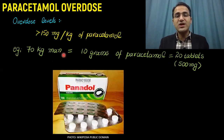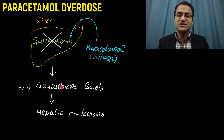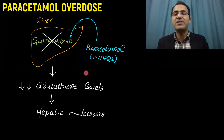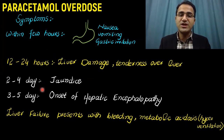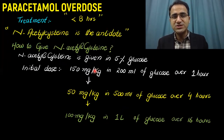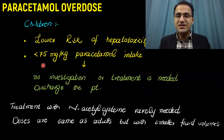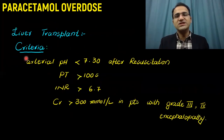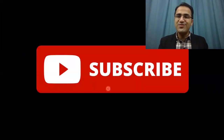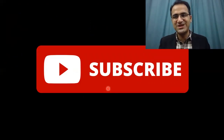In summary, we talked about the toxic dose of paracetamol, how it causes decreased glutathione levels and hepatic necrosis, and symptoms according to time. We covered investigations — where prothrombin time is the most sensitive indicator of liver damage — management of N-acetylcysteine side effects, lower risk of hepatotoxicity in children, and the criteria for liver transplantation. Please subscribe and check out other videos on toxicology and emergency medicine linked in the description.